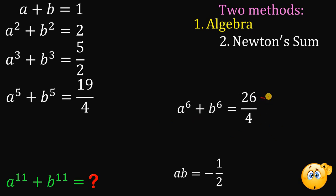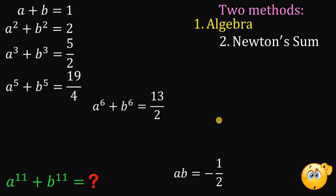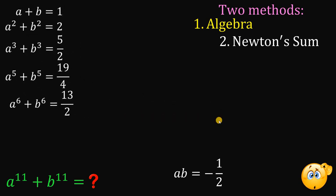We can simplify 26 over 4 by dividing both numerator and denominator by 2, giving us 13 over 2. That is the numerical value of a raised to the 6th power plus b raised to the 6th power.